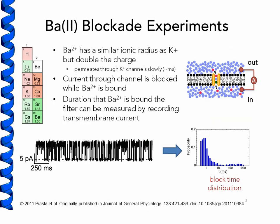Because barium has a similar ionic radius to potassium but double the charge, barium ions will bind to the selectivity filter of potassium channels and block the passage of other ions. Because these blocks occur on the millisecond timescale, they can be measured using single-channel recordings, and these data can be used to determine the kinetic parameters of barium permeation.